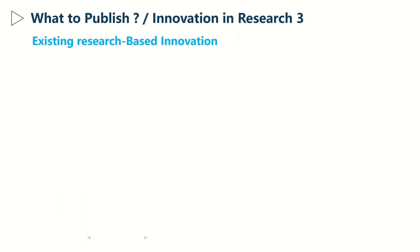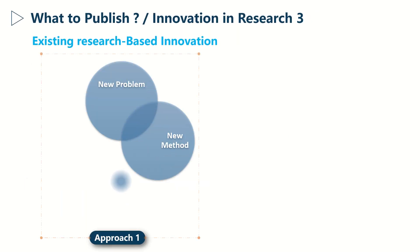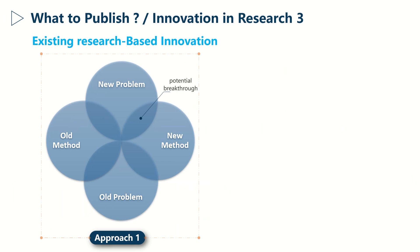Let's see how to innovate using existing research. There are two different approaches. You can use the combination problem-method: use a new method to solve a new problem, or a new method to solve an old problem. Another combination is to use an old method to solve an old problem — for example, taking an old method from mathematics to solve an old problem in chemistry.